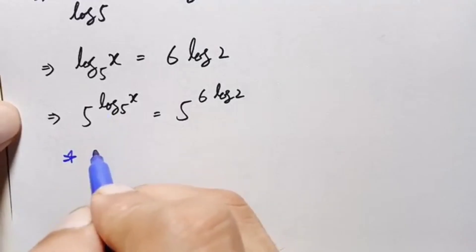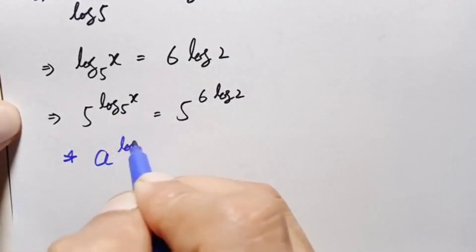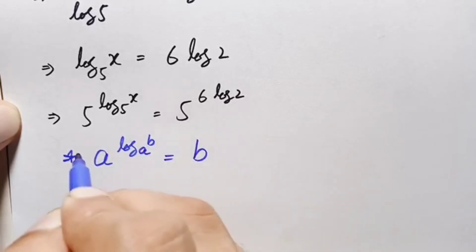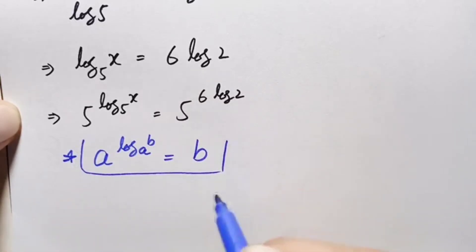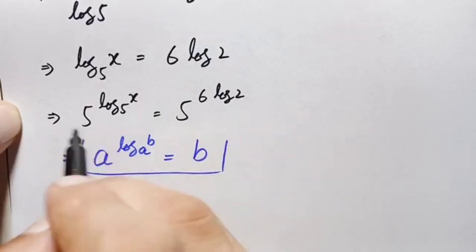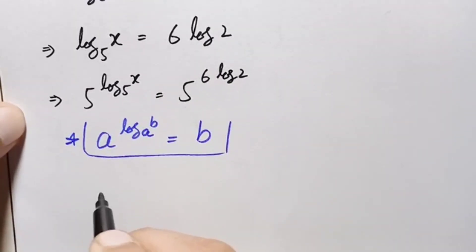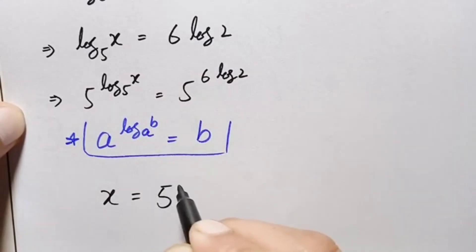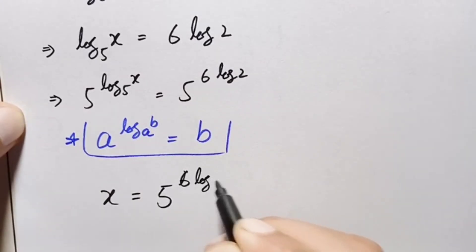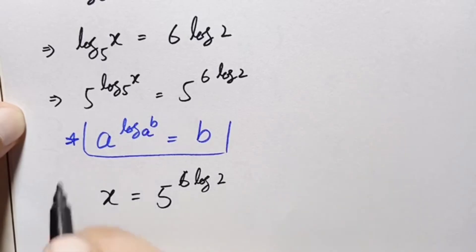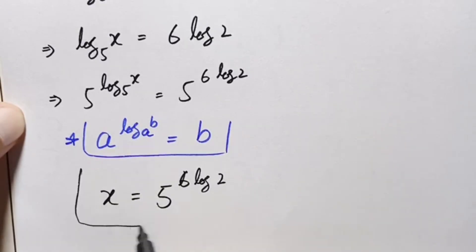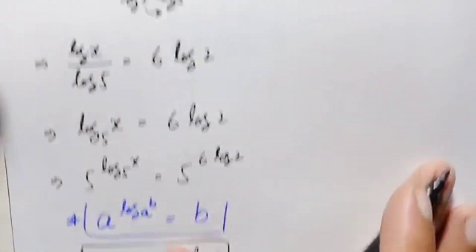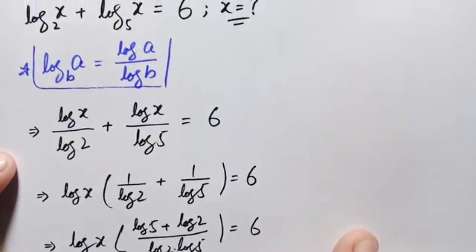Using the property that a raised to power log of b with base a equals b, the left hand side simplifies to x. So x equals 5 raised to the power of 6 times log of 2. This is our final answer for the value of x.